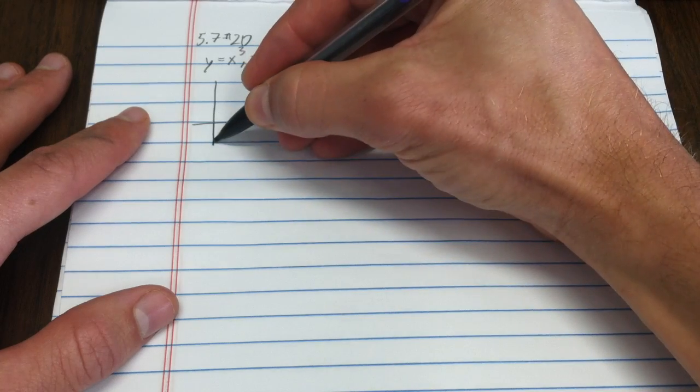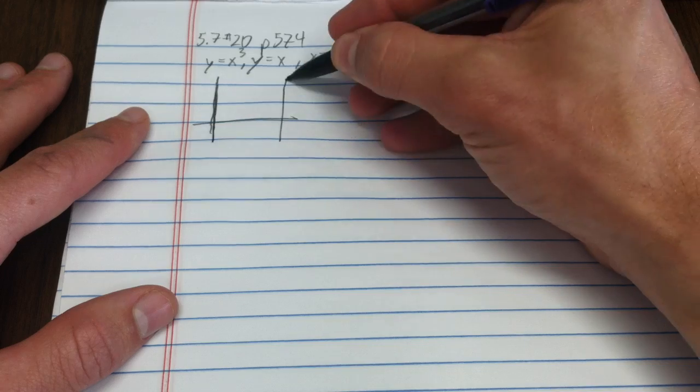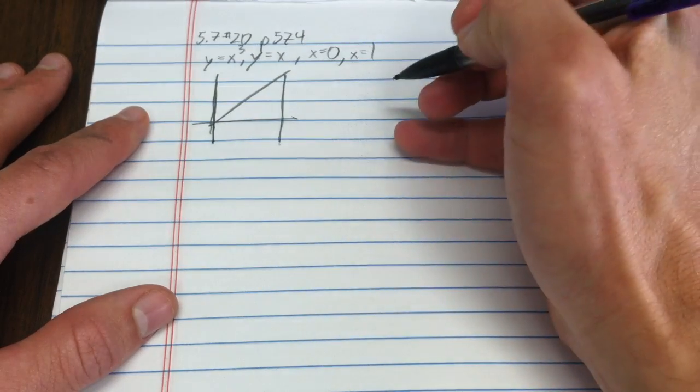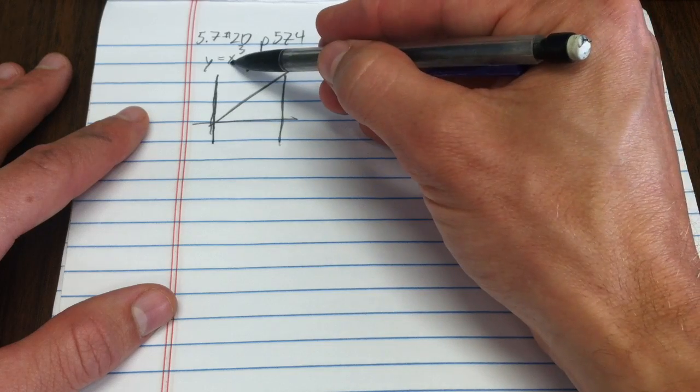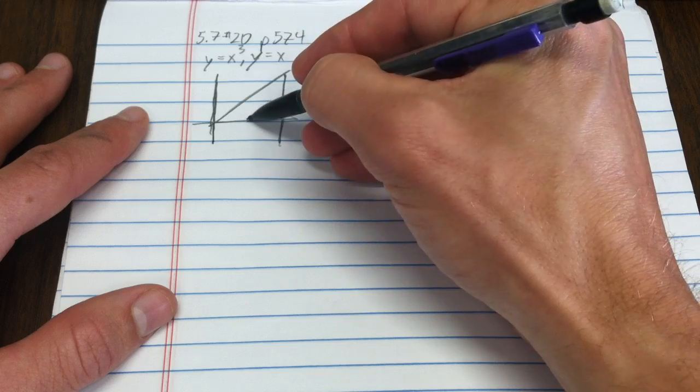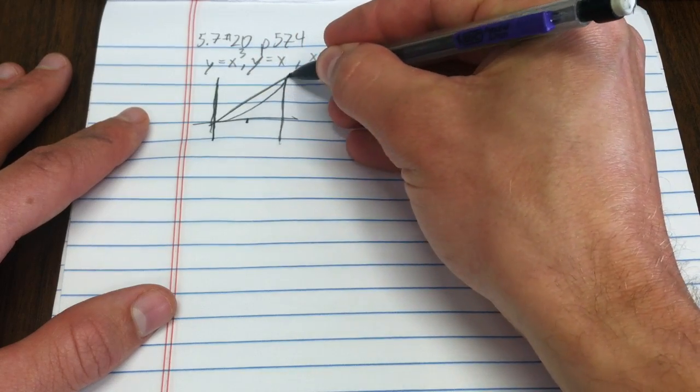x equals 0, that's the y-axis. x equals 1 is over there. y equals x looks like that. And y equals x cubed - if I put in, say, a half, that would have height an eighth. So it's going to be a region like that.